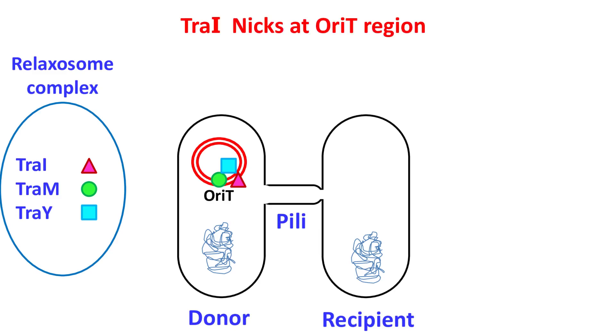The TraI protein nicks the F-plasmid at the OriT region. The 5' end of the nicked strand is then transferred to the recipient cell.